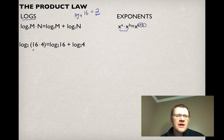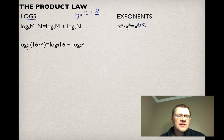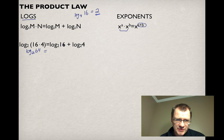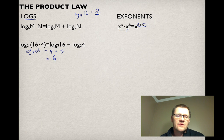Let's verify: log₂(16 × 4) should equal log₂(16) + log₂(4). On the left, 16 × 4 = 64, so we need the exponent to give 2 to get 64. On the right, what exponent gives 2 to get 16? That's 4. And what exponent gives 2 to get 4? That's 2. So 4 + 2 = 6. And log₂(64) = 6 as well. This proves the product law works.